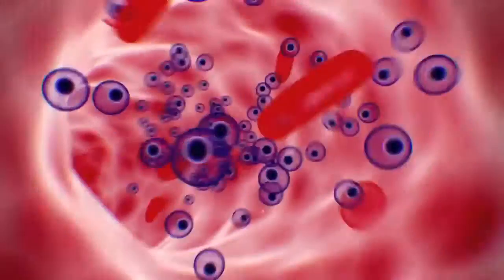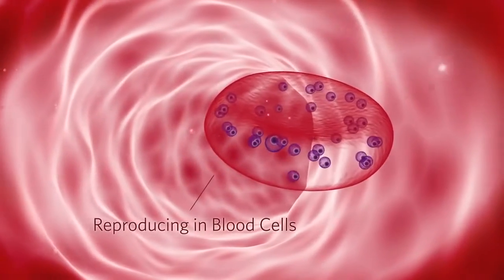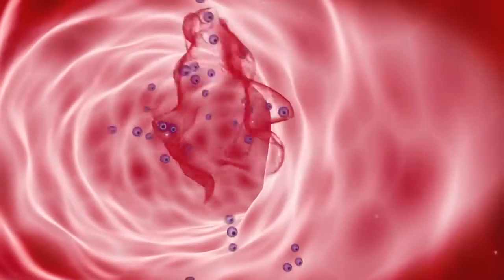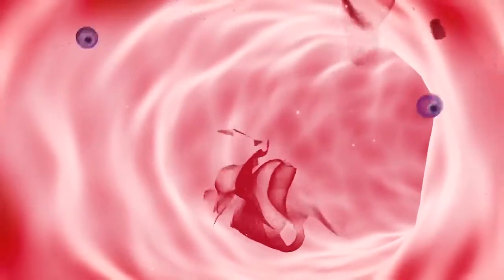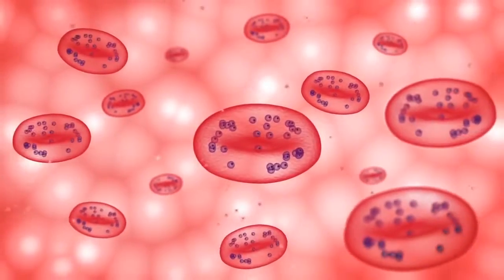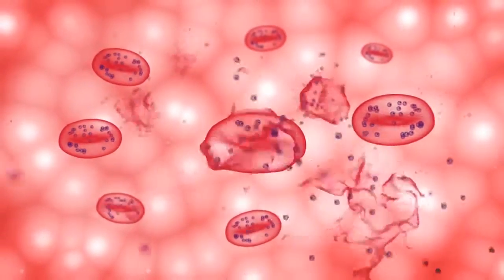They then infect healthy red blood cells, reproducing and eventually rupturing the cell, liberating more merozoites, which in turn go on to infect other cells, leading to the massive destruction of red blood cells.